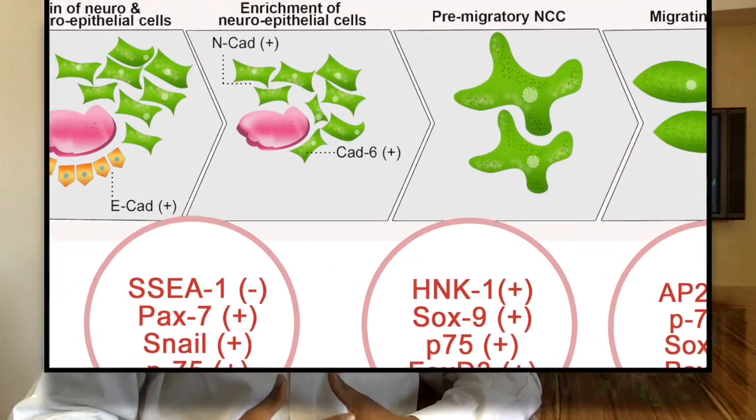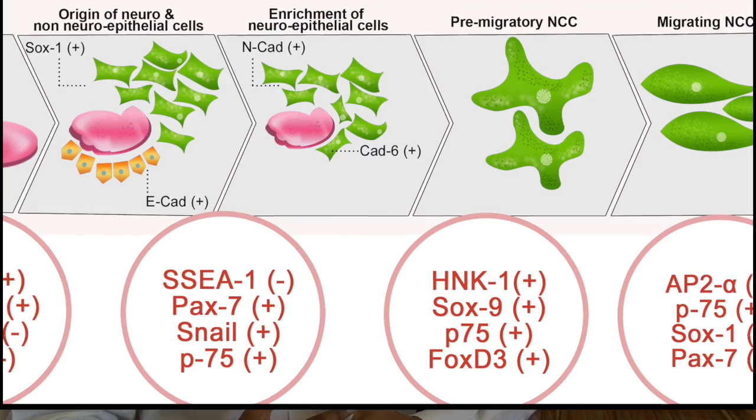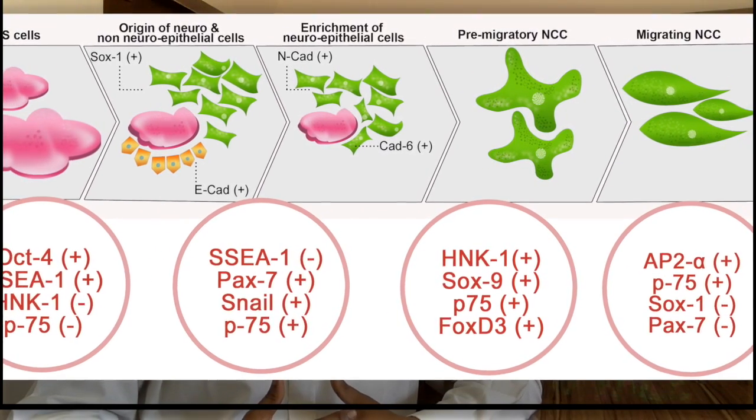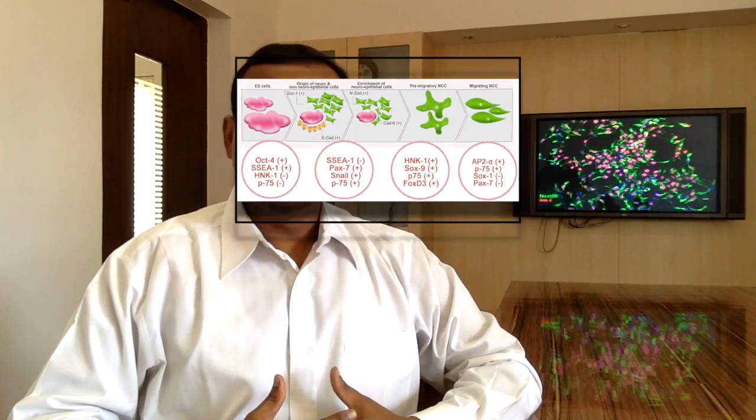The neural crest is a unique multipotent stem cell population that gives rise to diverse cell types of the peripheral nervous system, skin, bone and cartilage. Its development appears to take place in three distinct stages. More importantly, the neural crest undergoes a complete and gradual segregation from the neural epithelium through epithelial-to-mesenchymal transition, minutely orchestrated by sequential interplay of several genes and proteins via multiple signaling pathways. This has emerged as a relevant model to understand EMT in a non-malignant environment.